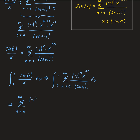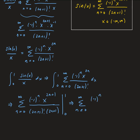Integrating with respect to x, we get minus 1 to the n — that is just a constant — times x to the 2n plus 1, divided by 2n plus 1 factorial times 2n plus 1. We evaluate this from 0 to 1. Plugging in the bounds, we get the series from 0 to infinity of minus 1 to the n. Plugging 1 in for x gives 1 to the 2n plus 1, which is just 1, divided by 2n plus 1 factorial times 2n plus 1. Plugging in 0 for x gives 0. So this is the expression for our solution.